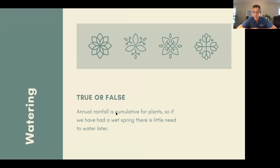True or false: Annual rainfall is cumulative, so if we've had a wet spring, there is little need to water later. This is false and perfectly illustrated by what's happening now — record rainfall in May followed by two weeks of 90-degree temperatures leading to drought. The analogy: you had six glasses of water two days ago. Do you need water today? Absolutely. The plant is exactly the same way.